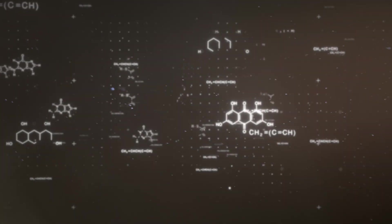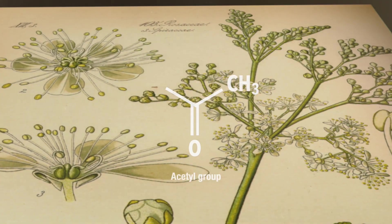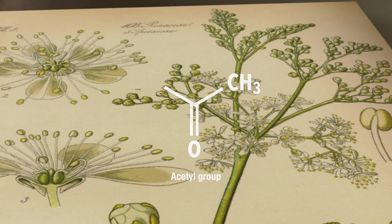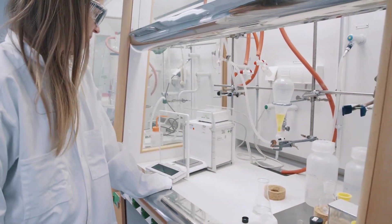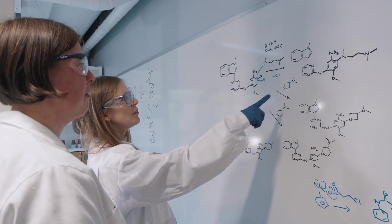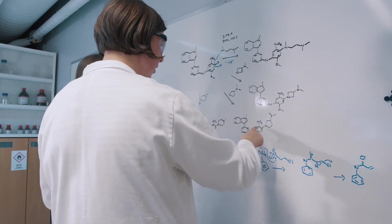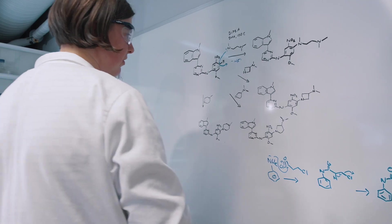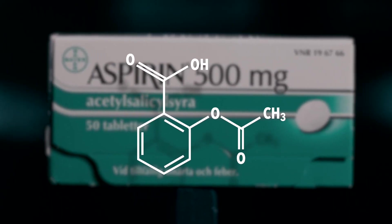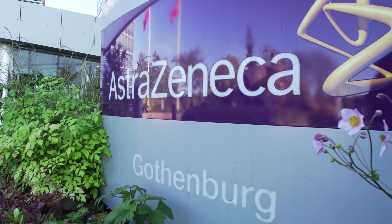And even within larger molecules, certain combinations of atoms can form especially strong groups together, just like in our example with meadowsweet. With this knowledge, we can experiment with how to break specific chemical bonds in order to replace certain parts of a molecule with something else, just like Felix Hoffmann did to create aspirin. And this is still what today's pharmaceutical research is all about.